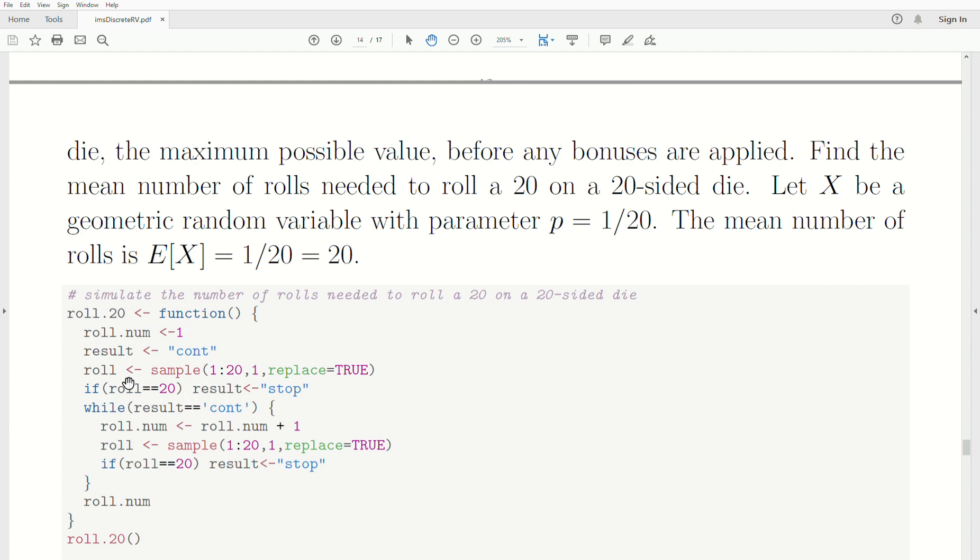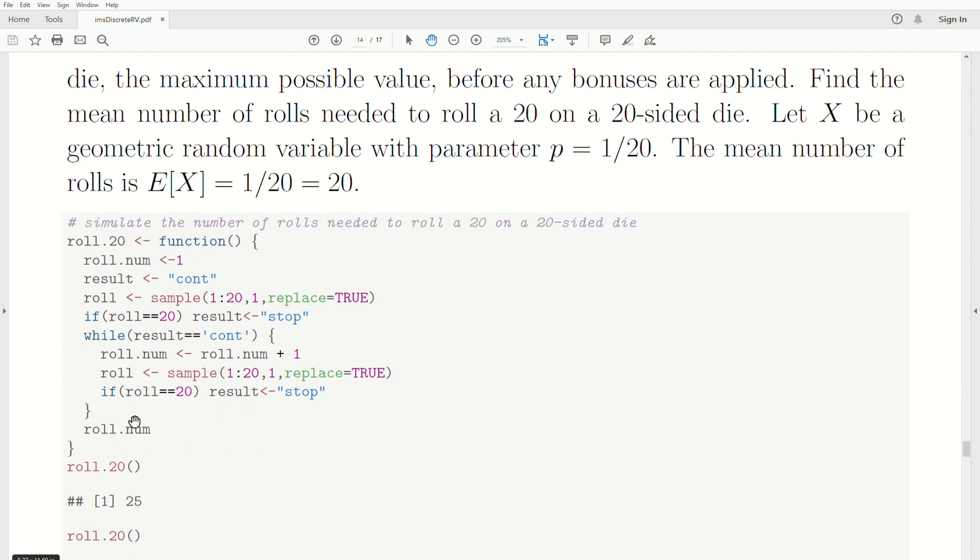And we sample with replacement one time from the numbers 1 to 20. And that's our roll. Now, if roll is 20, we stop. If it's not, we continue. Then we add one to our roll count. So it's the second roll. We sample from 1 to 20 again, just once with replacement. Actually, it doesn't need to be replacement or not, but that's a habit of mine, I guess. If roll is 20, we stop. Otherwise, we keep going. And we output the roll number.